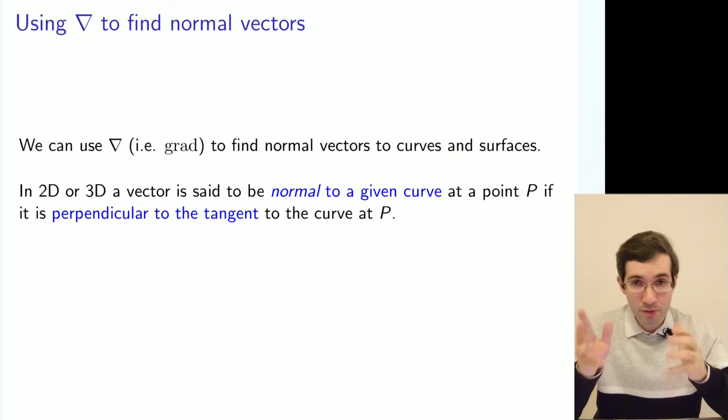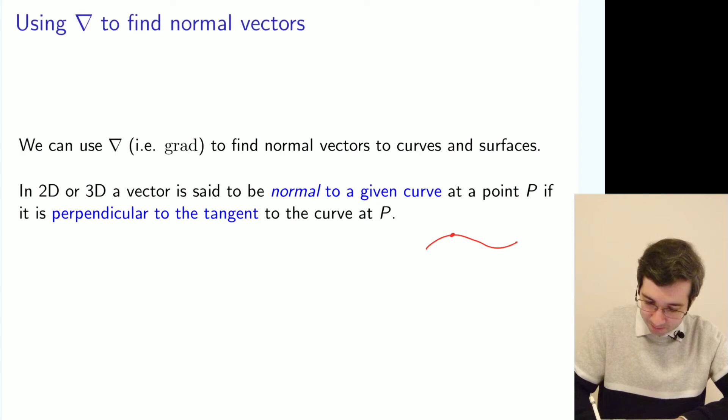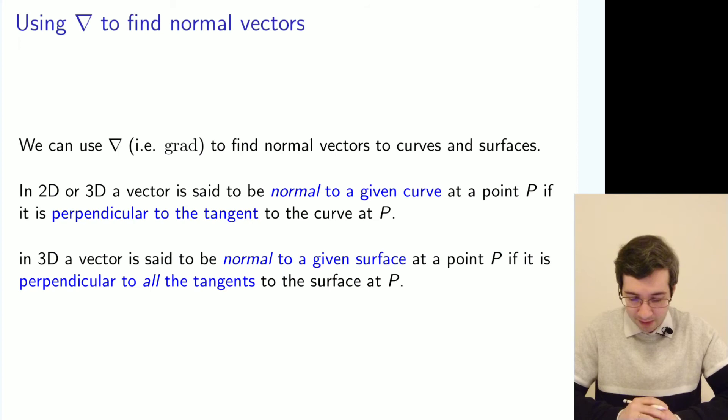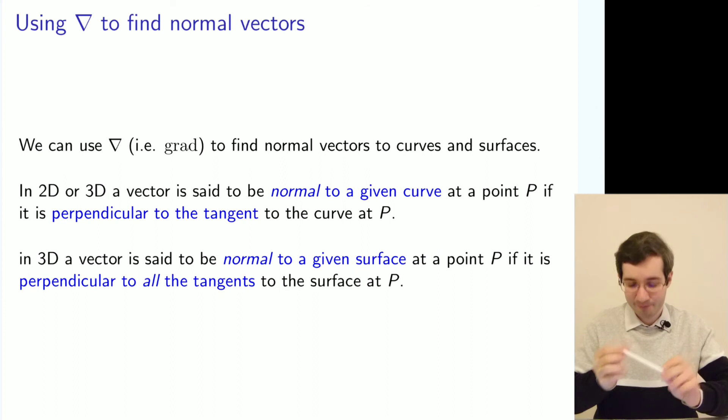We say that a vector is normal to a curve at a given point if it is perpendicular to the tangent of that curve. You have a curve with the tangent at point P, and the normal will be perpendicular to that tangent. In 3D it's very similar, but instead of having a normal to a tangent, you have normals to all tangents at a given point, because on a surface you have multiple directions you can put your tangent to.